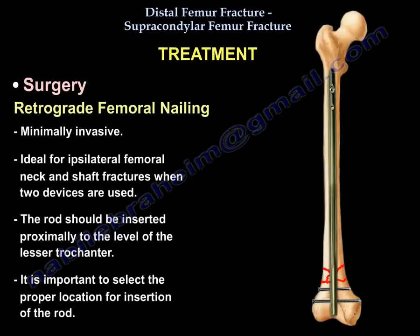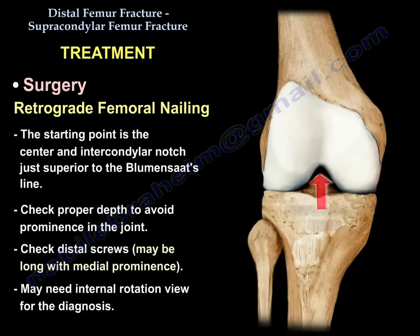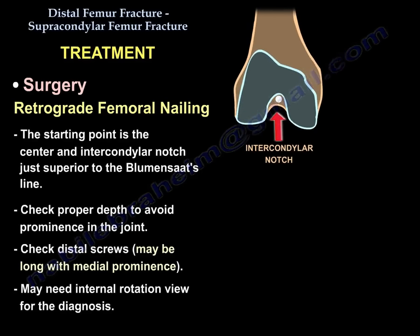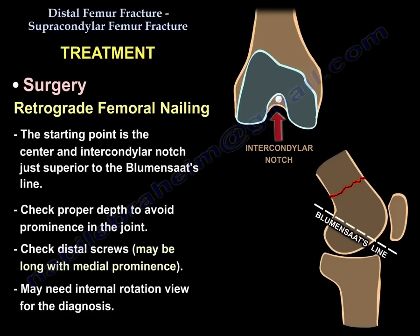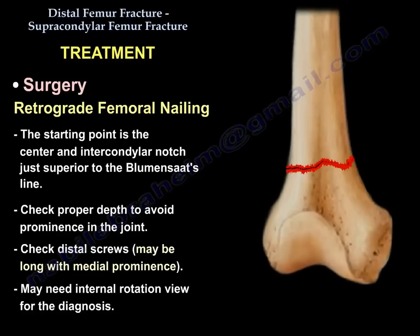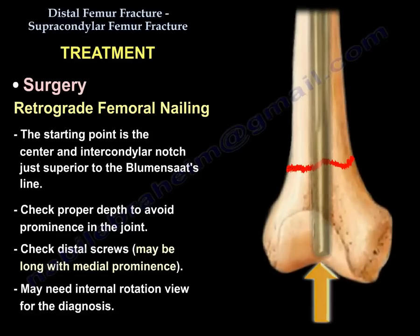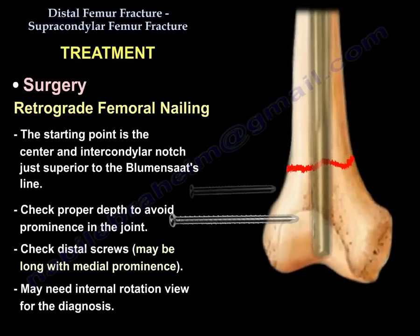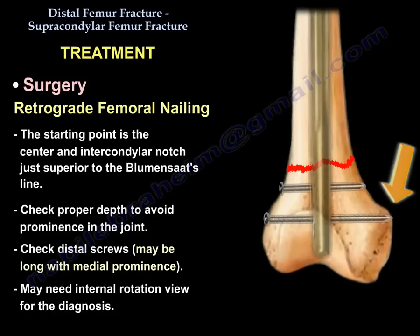Retrograde femoral nailing is minimally invasive. It is ideal for ipsilateral femoral neck and shaft fractures. When two devices are used, the rod should be inserted proximally to the level of the lesser trochanter. It is important to select the proper location for insertion of the rod. The starting point is the center of the intercondylar notch, just superior to Blumensaat's line. Check the proper depth of the rod to avoid prominence in the joint, and check the distal screws as they may be long — an internal rotation view may be needed to diagnose that.